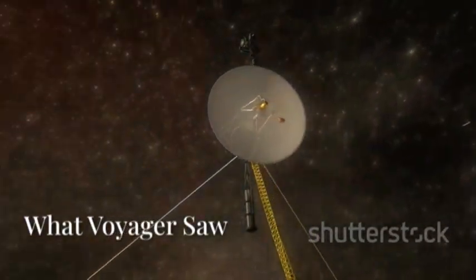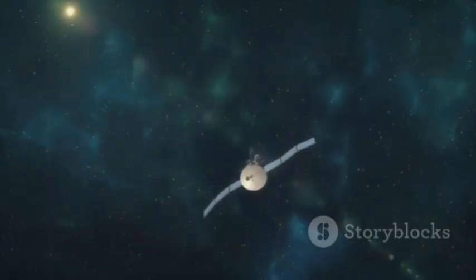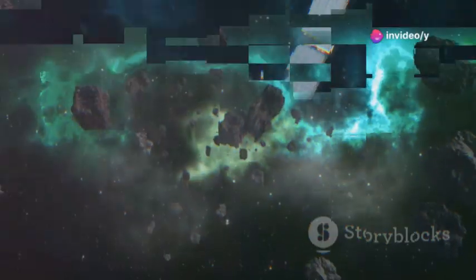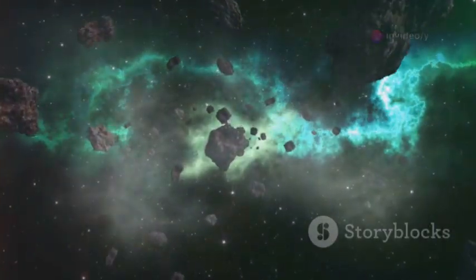When Voyager 2's data began to flow again, scientists were stunned. The probe had been recording the environment of interstellar space the entire time it was silent. The data confirmed that space just outside our heliosphere is chaotic and violent.